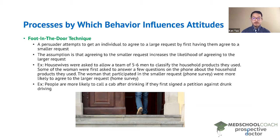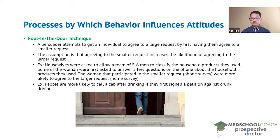As another example, one which is not quite as obvious, people are more likely to call a cab after drinking if they first signed a petition against drunk driving. In this case, the larger task is to call a cab after drinking, and the smaller task is signing a petition against drunk driving. By getting people to sign a petition against drunk driving, they are more likely to call a cab after drinking. This is the foot-in-the-door technique.